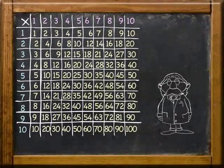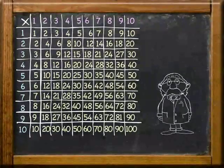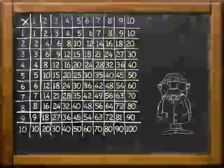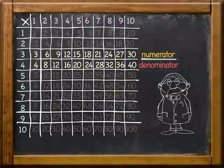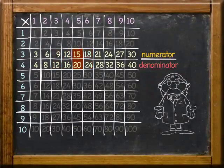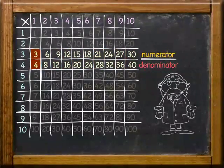First of all, we select rows for the numerator and the denominator. In this case, row 3 is the numerator and row 4 is the denominator. By selecting different columns, we can determine different equivalent fractions.